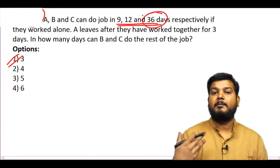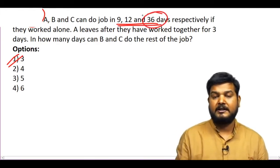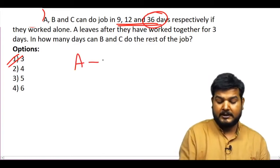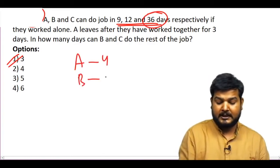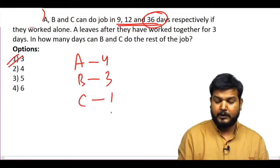Now, let's understand from the answer. If you consider the total work of 36 units, if you use LCM approach, how much will 9, 12, 36 LCM be? So, A value is 4 units per day, B is 3 units per day, C is 1 unit per day.